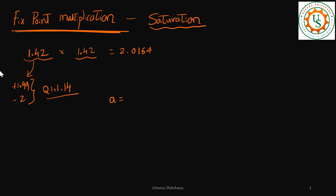To convert 1.42 into Q14 format, I multiply by 2 to the power of 14 and then multiply by 0.5, which gives 23265. Since B is the same number, A = B = 23265. The result A × B = 23265 × 23265 = 541,260,225.